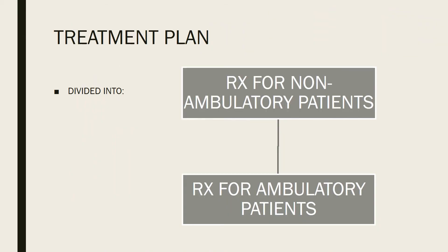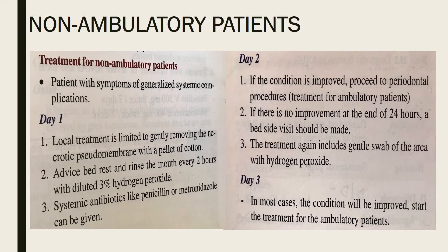The treatment plan is divided into two types based on patient category: treatment for non-ambulatory patients and treatment for ambulatory patients. Non-ambulatory patients are those with systemic complications; ambulatory patients have ANUG without systemic complications.